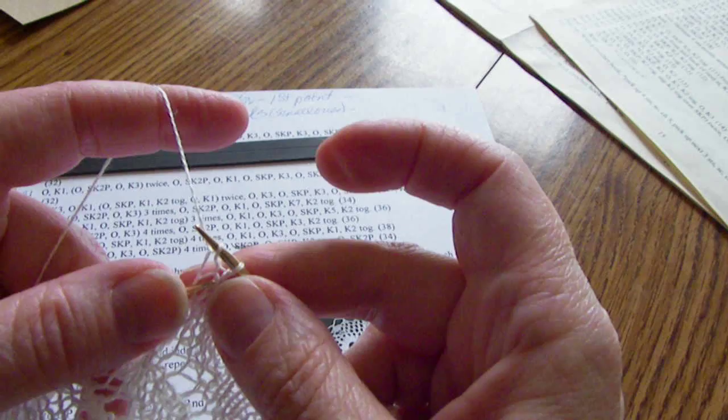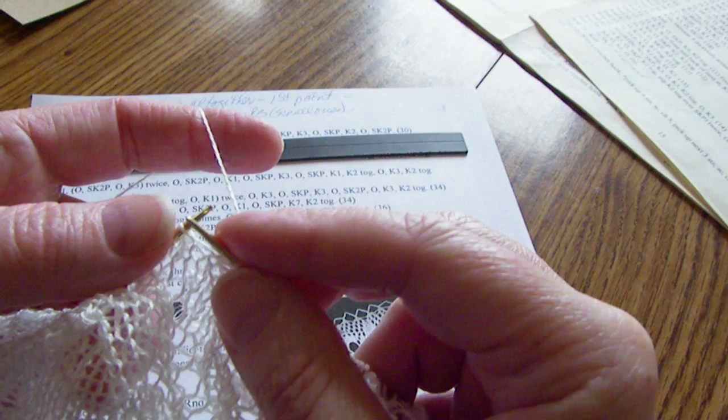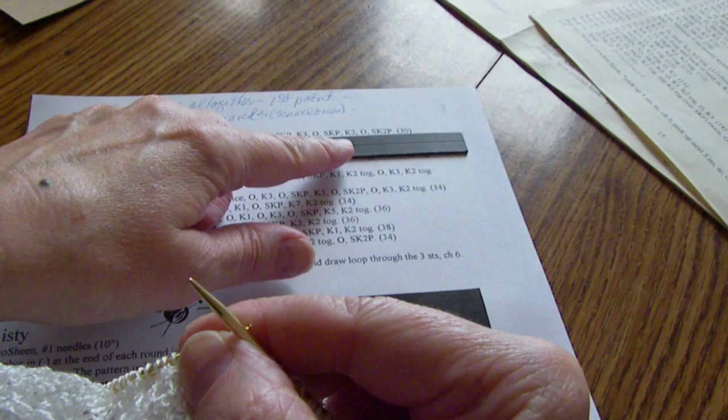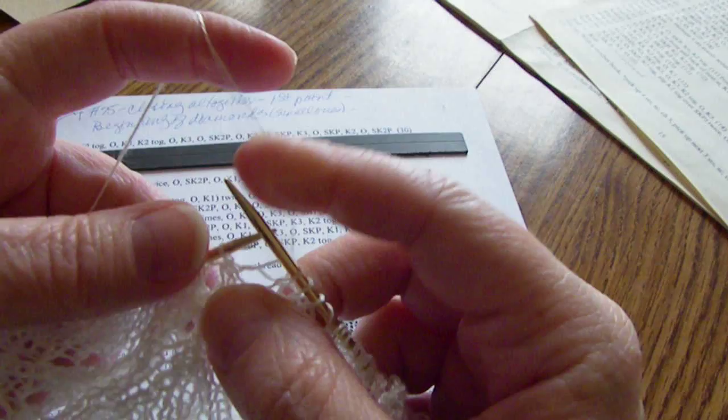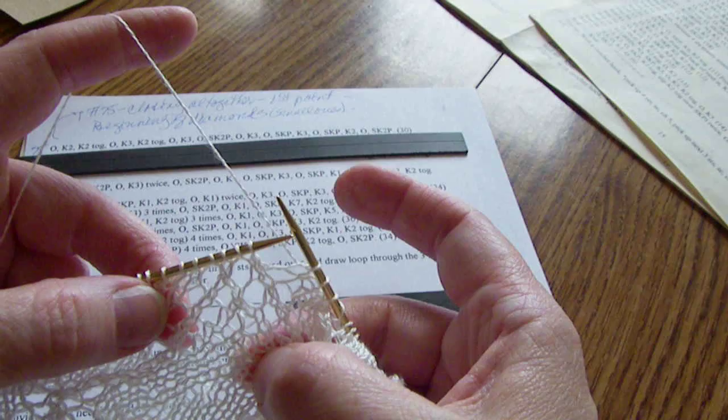We do a yarn over, we slip knit pass the slip stitch over and pass it over. So what this looks like is it looks like a mistake but what we're actually doing is doing the other side of this point and you'll see when we do this how it looks.